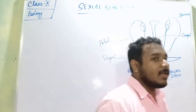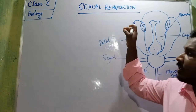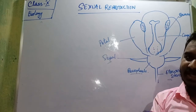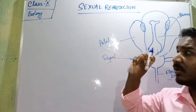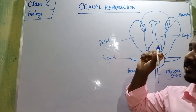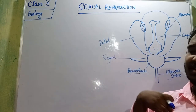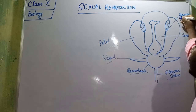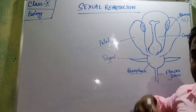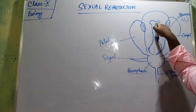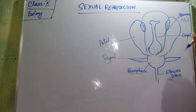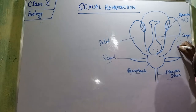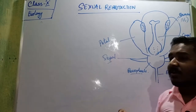Inside the flower there are two main portions. The long sticks that are slightly dusty or powdery — they are called stamen, and these are the male part. The sticky middle portion is called the carpel, and that is the female part. So stamen is the male part and the sticky portion — the carpel — is the female part.